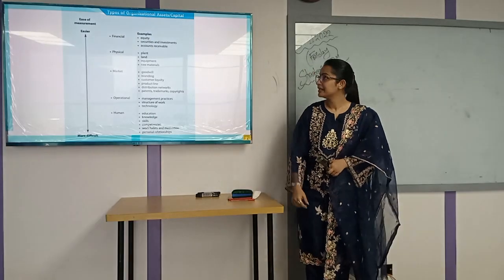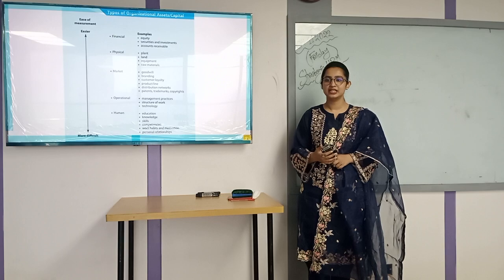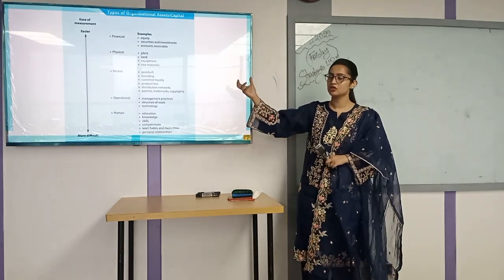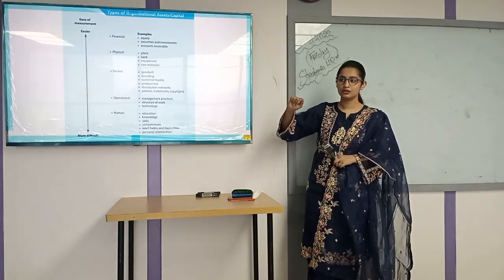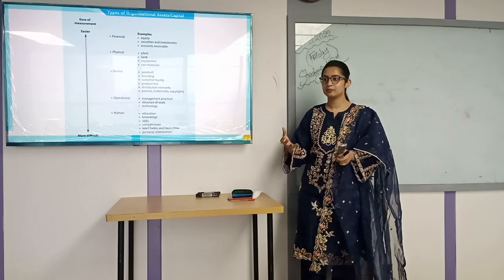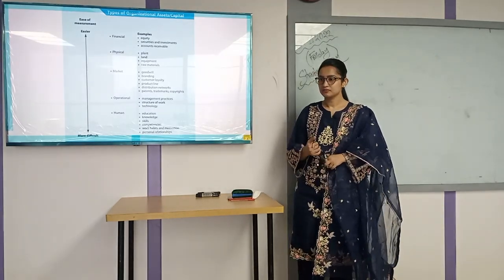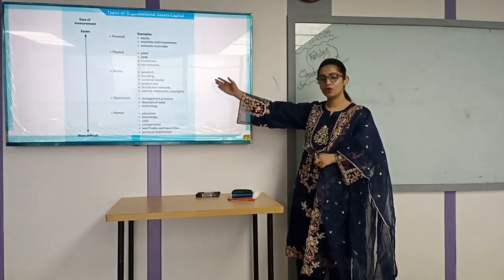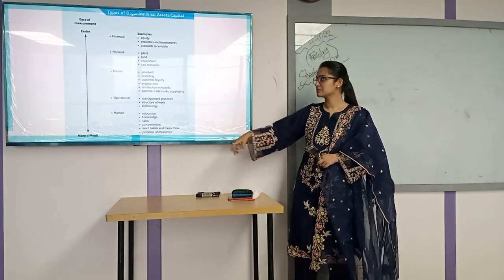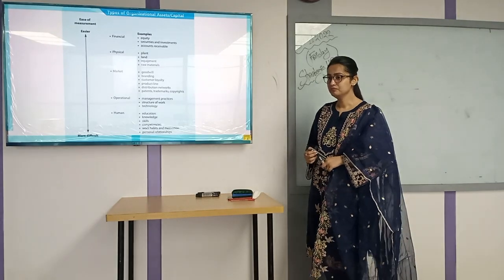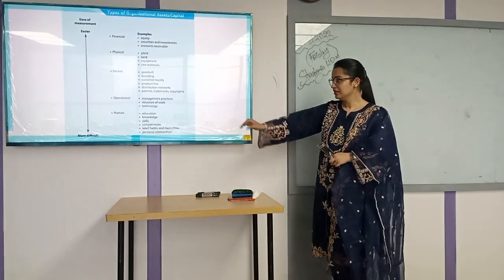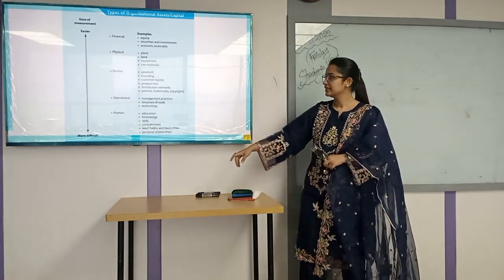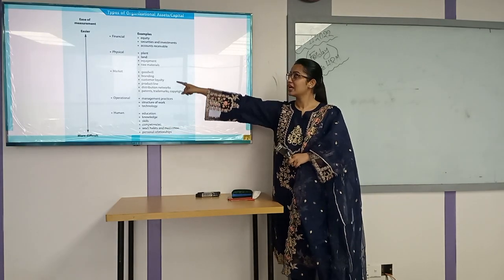The last topic for today is types of organizational assets and capital. Financial resources include equity, shares, cash, accounts payable and receivables. Physical resources include equipment, land, plant, machinery, and buildings. Market resources include goodwill, word of mouth, branding, product quality, face value, customer loyalty, product line, and sometimes patents, trademarks, and copyrights. Operational resources include management practices, management policies, and technology. Human resources include education, knowledge, skills, competencies, and work habits. Among all these, human resource is the most difficult to manage, while finance is the easiest.